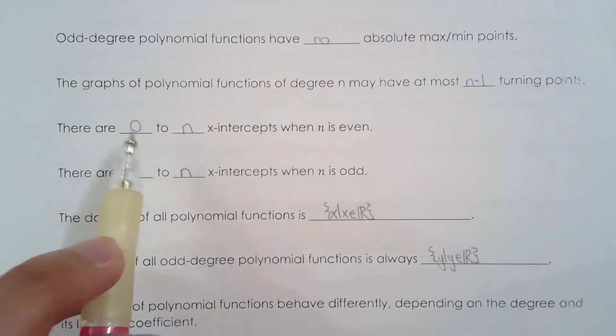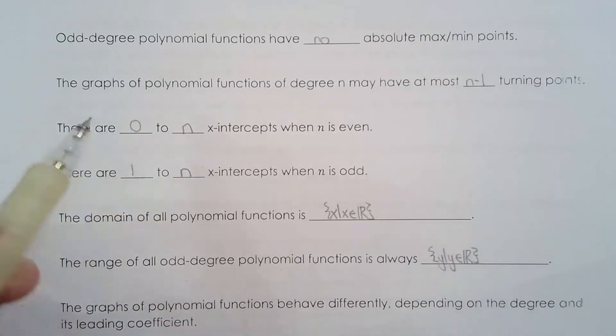If it's even the x-intercepts go from 0 to n because you can have no x-intercepts. You don't have to necessarily touch the x-axis based on the end behavior but if you're an odd degree polynomial you have to have at least one x-intercept and the maximum number of x-intercepts is n based on factored form of the polynomial.